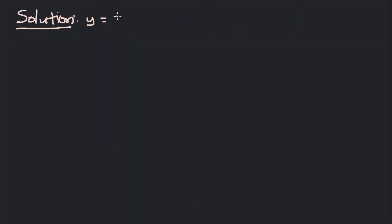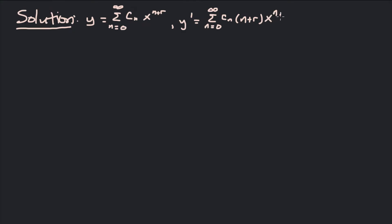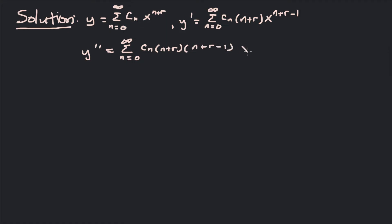We start with our series y equals the sum from 0 to infinity of cₙ x to the n plus r. Differentiating with respect to x gives y prime equals the sum from 0 to infinity of cₙ times (n plus r) times x to the n plus r minus 1. And then y double prime equals the sum from 0 to infinity of cₙ times (n plus r) times (n plus r minus 1) times x to the n plus r minus 2.